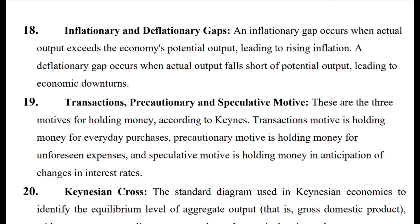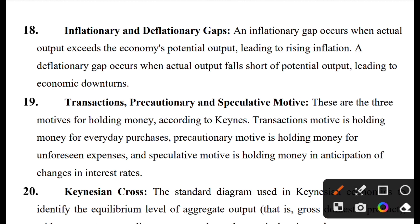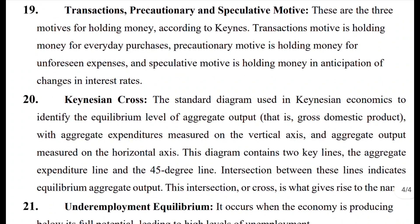Precautionary and speculative motives — this is Keynes's liquidity preference theory. The three motives to hold money are: transaction motive — to hold money for everyday purchases; precautionary motive — to hold money for unforeseen expenses; and speculative motive — to hold money based on changes in the interest rate.